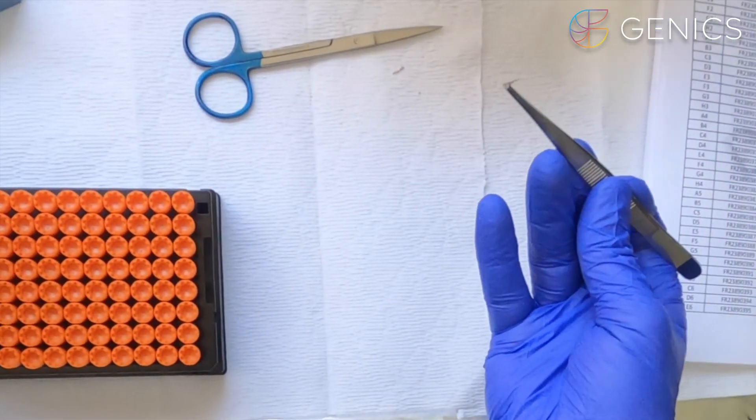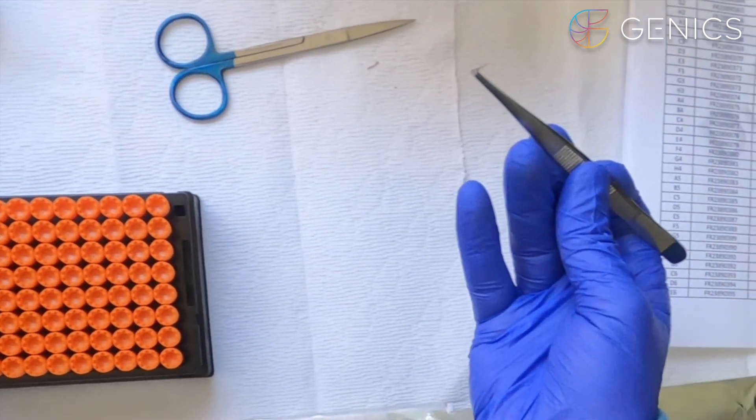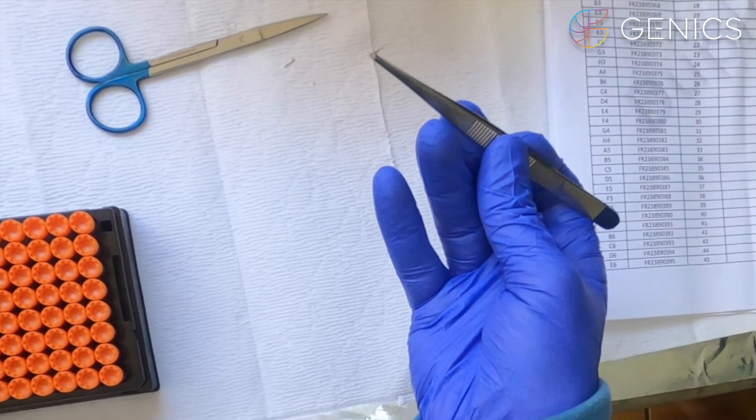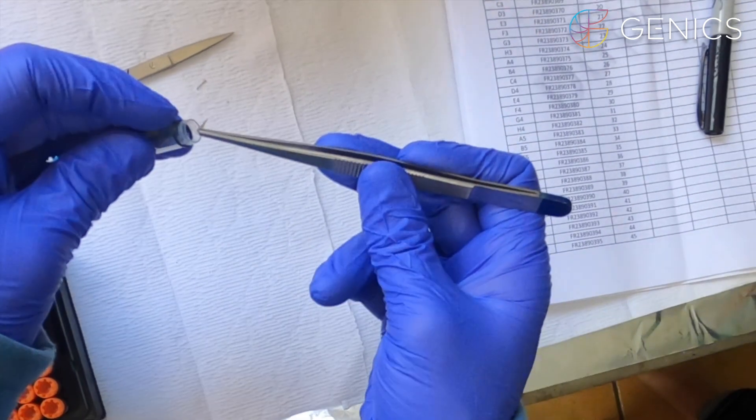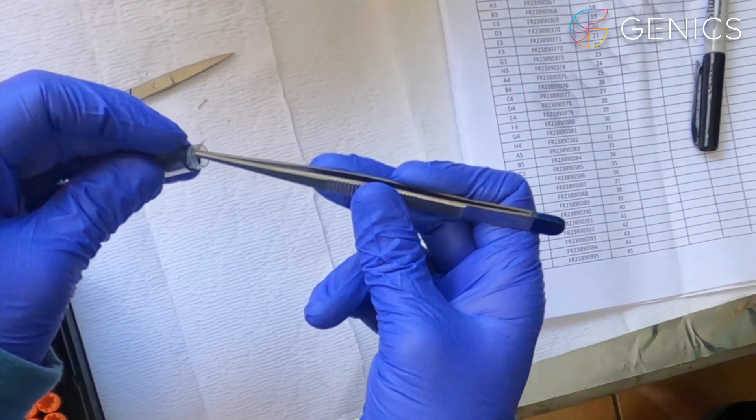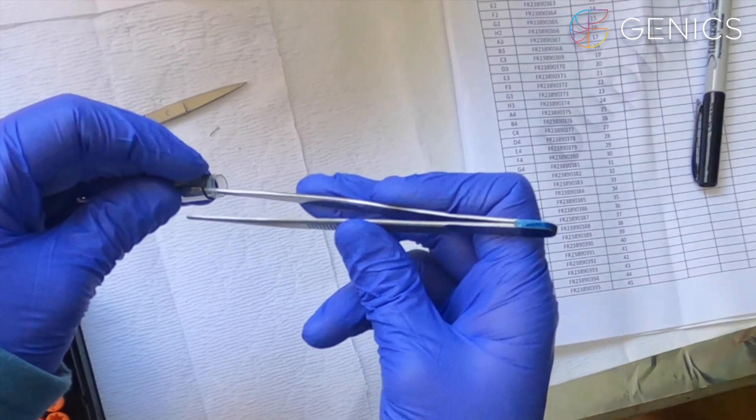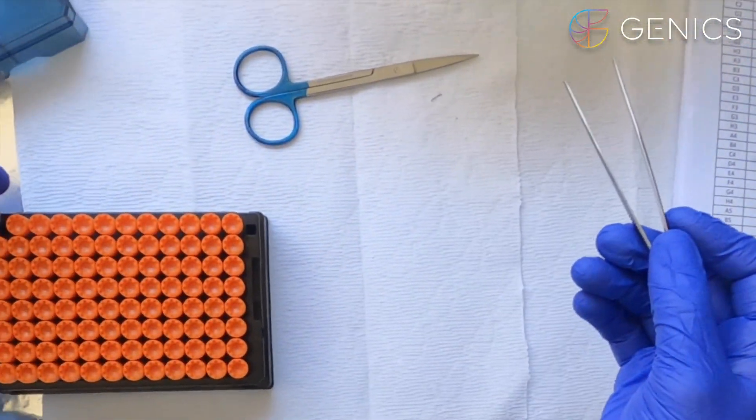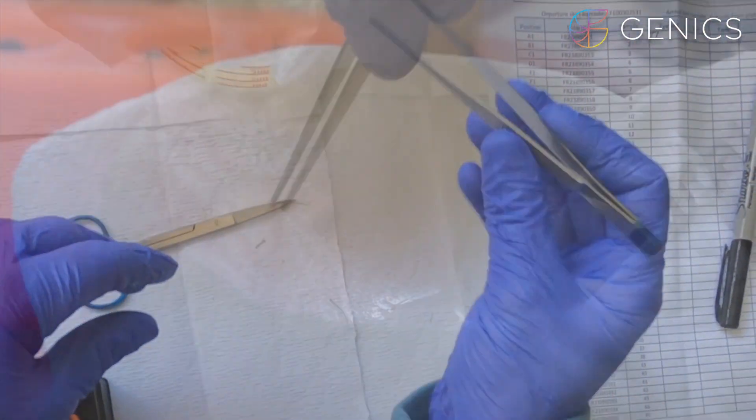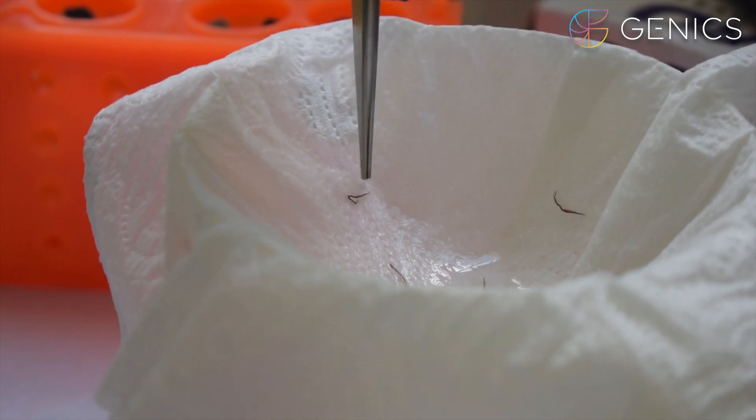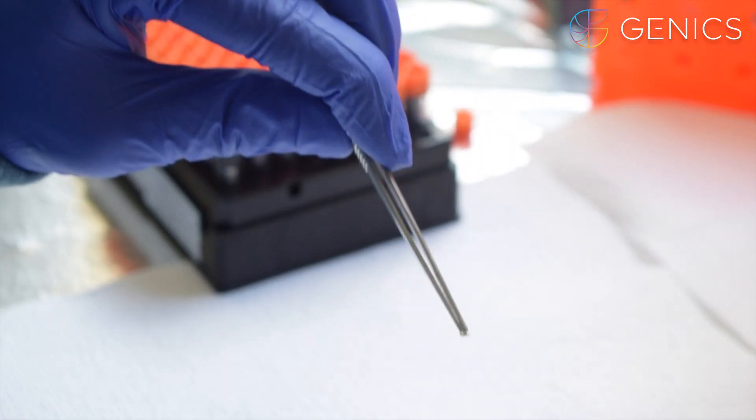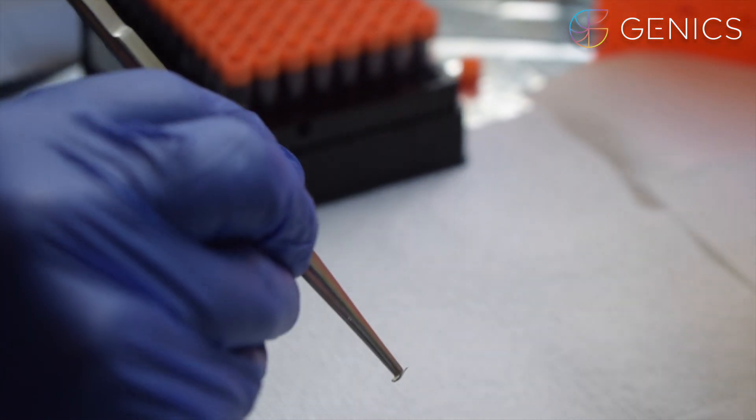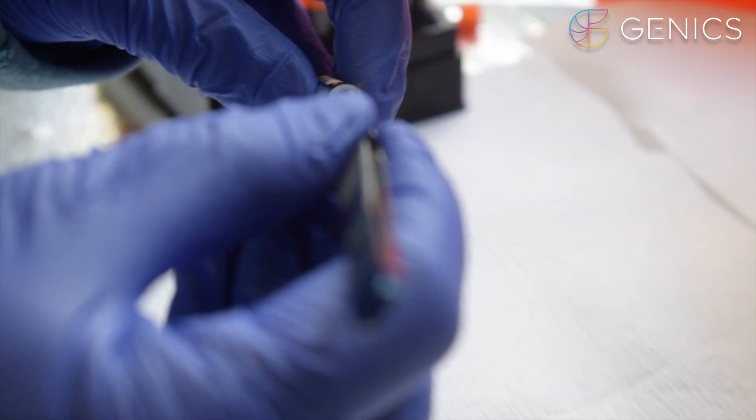We then put our shrimp head into our barcoded tube which already has our 70% laboratory grade ethanol. We're going to put a total of 15 heads in this same tube. When we're doing a pooled sample we don't need to sterilize our scissors and tweezers between heads which are going into the same tube.